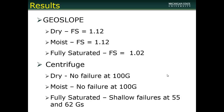Based on our GeoSlope and centrifuge assessments: GeoSlope indicated our dry and moist cases should both fail at about a 1.12 factor of safety, which in the centrifuge would be the equivalent of running at 112 Gs. We also had an estimated failure for the fully saturated case at a 1.02 factor of safety, or 102 Gs. In the centrifuge, we didn't experience failure at 100 Gs for the dry and moist cases due to safety concerns. We did experience failure in the fully saturated case at 55 and 62 Gs as shallow failures, which would equate to almost 20 to 30 feet deep of failure in an actual slope of about 100 feet in height.